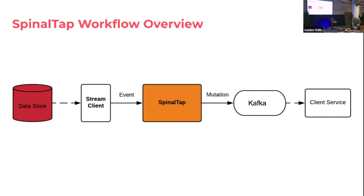This is the general workflow of SpinalTap. We capture events from the datastore using a stream client. For MySQL, we use an open-source library called the MySQL binlog connector, which gives us all events at the table level. Those events are propagated to SpinalTap, which converts them to mutations and publishes them to Kafka. Other services interested in those mutations can consume those Kafka topics and receive the notifications.